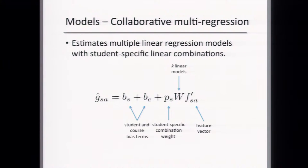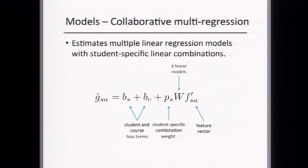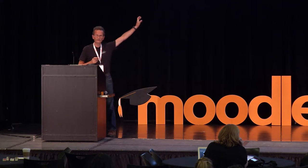The math may be a bit much, but it works. The key idea is: the global model assumes everyone shares a single regression model. The opposite extreme is every student has their own model, but we don't have enough data to estimate that. So this model is somewhere in between — students belong to different groups, each group has its own model, and the student-specific model is a linear combination of those. That's why we call it the collaborative multi-regression model, drawing on ideas from collaborative filtering.